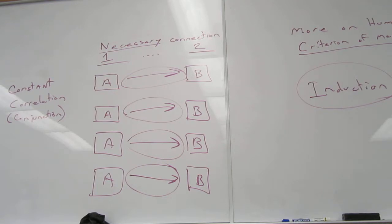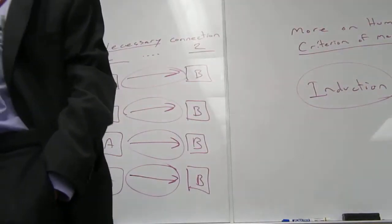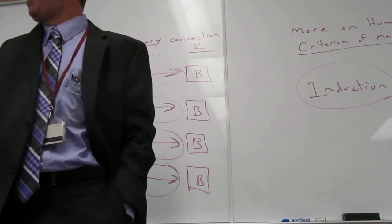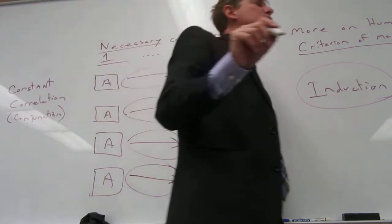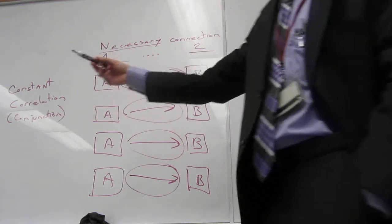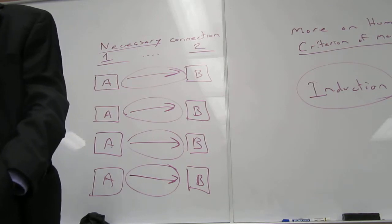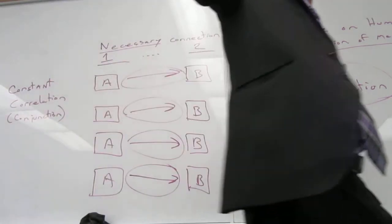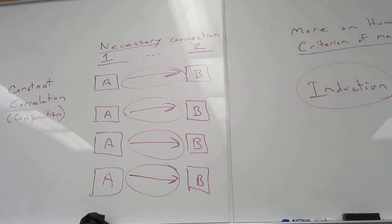You can't know that there's a necessary connection because you never actually see the necessary connection. All you ever see is the correlation. You cannot know for certain that the two events are connected. That goes beyond our rational powers. Because what we're doing is we are taking the data of our experience and we are making a prediction about the future experiences.